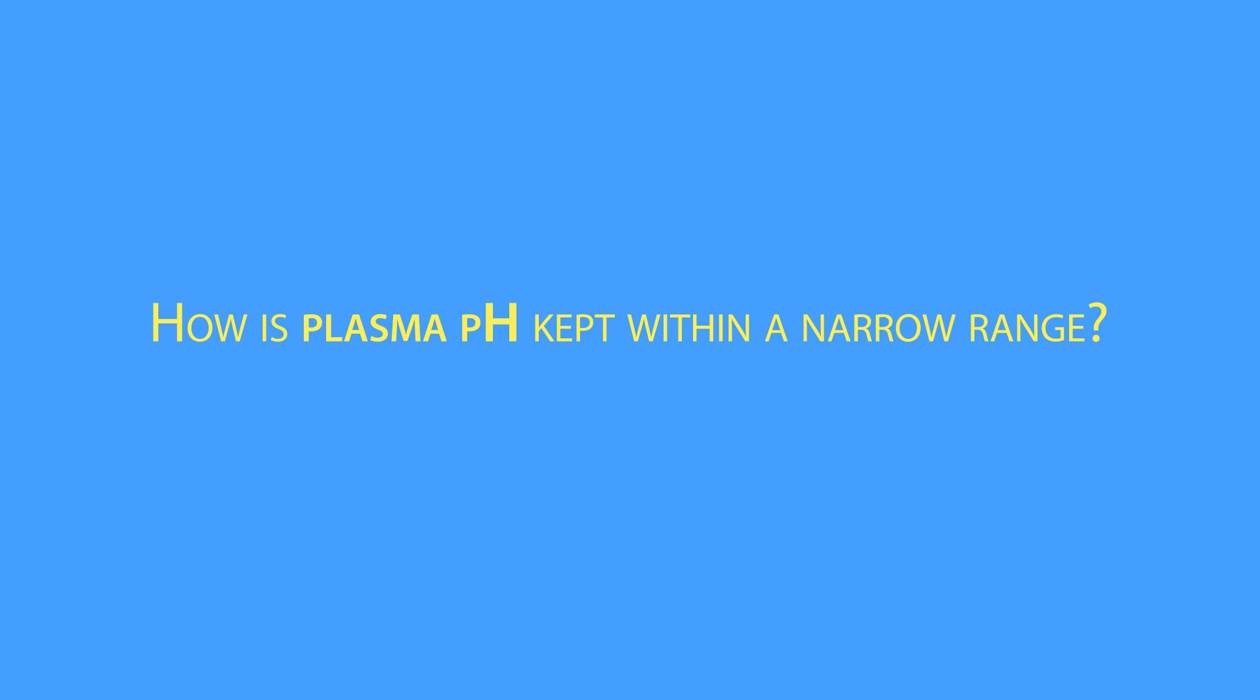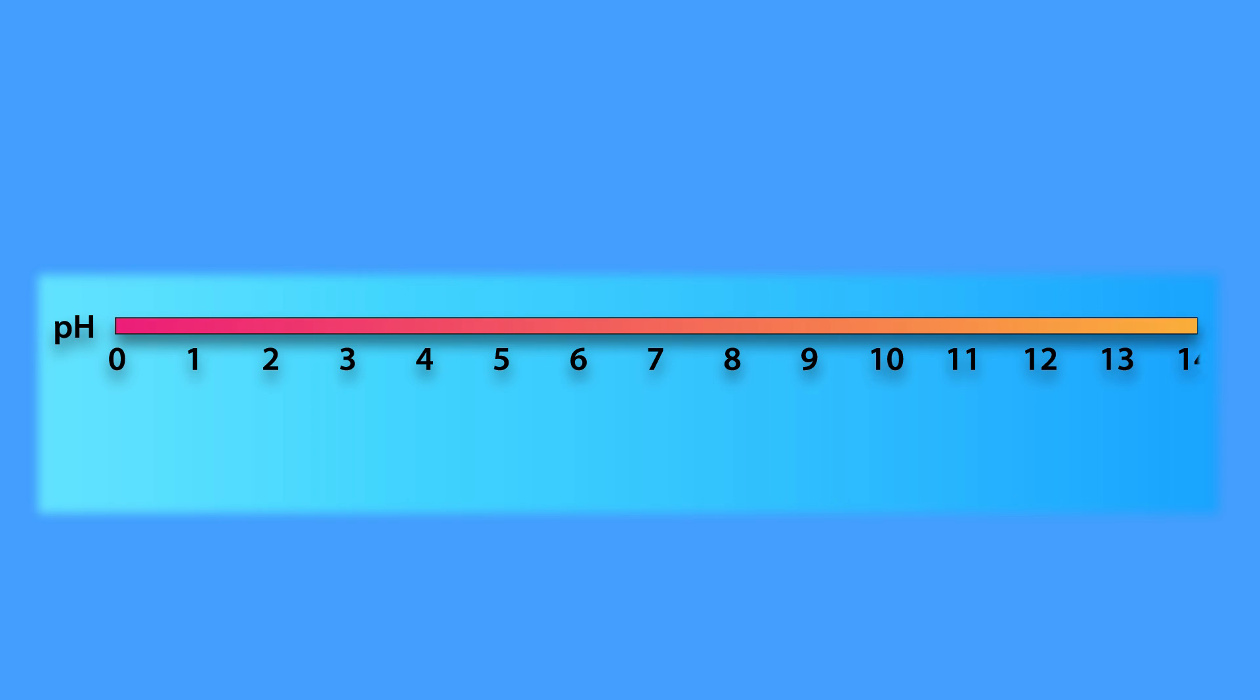Well, before we answer that question, let's first describe pH, which ranges from 0 to 14, with 7 being neutral and less than 7 considered acidic, while anything greater than 7 is considered basic.